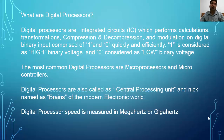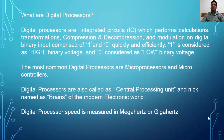So what are digital processors? Digital processors are integrated circuits which perform calculations, transformations, compression and decompression of waves, and modulation on digital binary input comprised of ones and zeros quickly and efficiently. One is considered as high binary voltage and zero is considered as low binary voltage. The most common digital processors are microprocessors and microcontrollers. Digital processors are also called central processing units and nicknamed the brains of the modern electronic world.